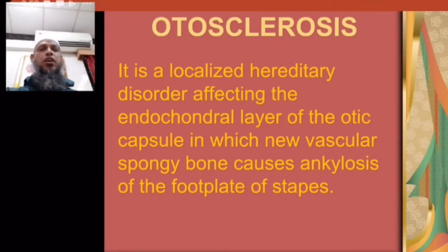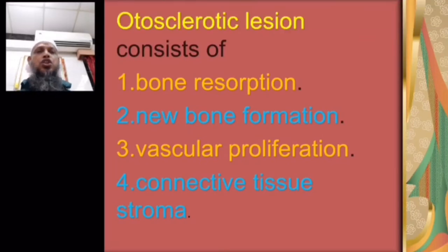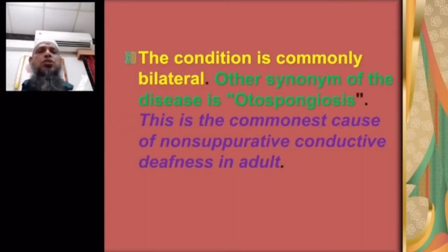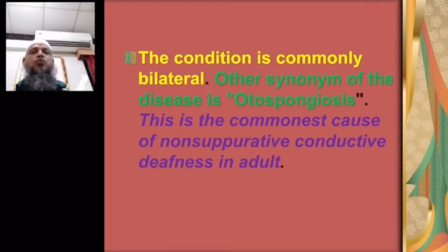Otosclerosis is a localized hereditary disorder affecting the endochondral layer of the otic capsule, in which new vascular spongy bone causes the ankylosis of the foot plate of the stapes. An otosclerotic lesion consists of bone resorption, new bone formation, vascular proliferation, and kinetic stroma. Bone resorption is caused by the osteoclast and new bone formation by the osteoblast. The condition is usually bilateral; another synonym of the disease is osteospongiosis. It is the commonest cause of non-suppurative conductive deafness in adults.